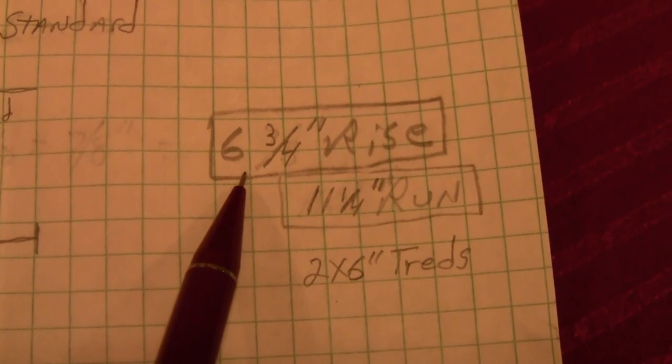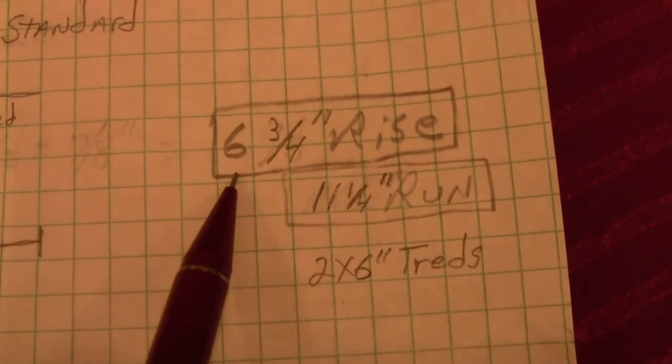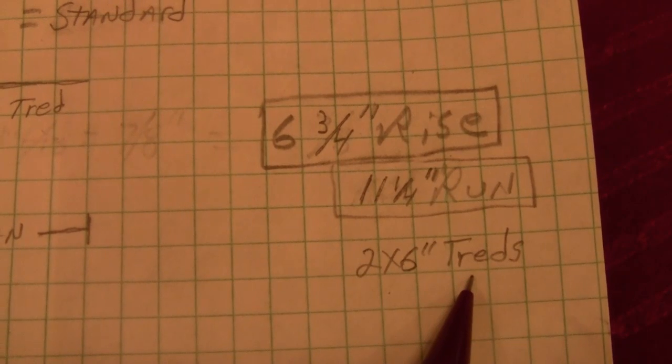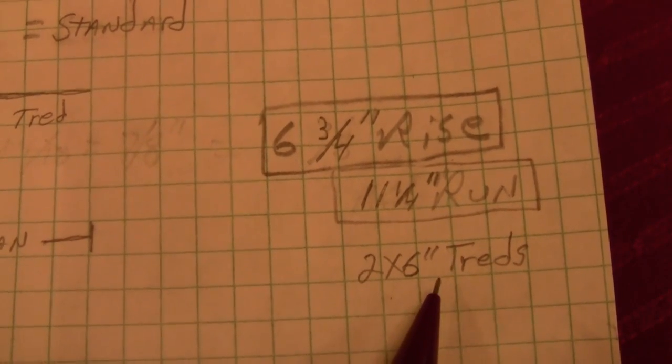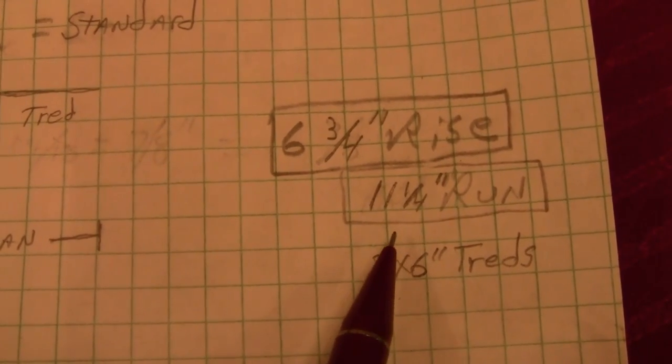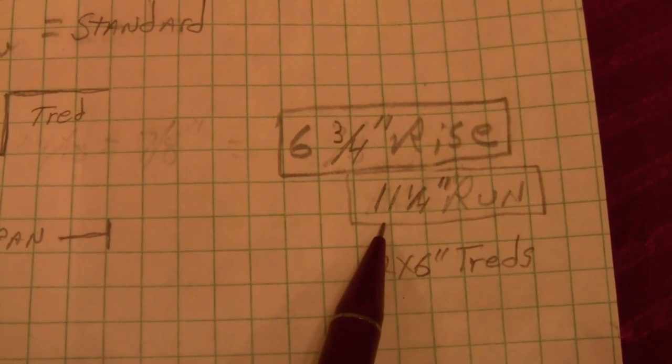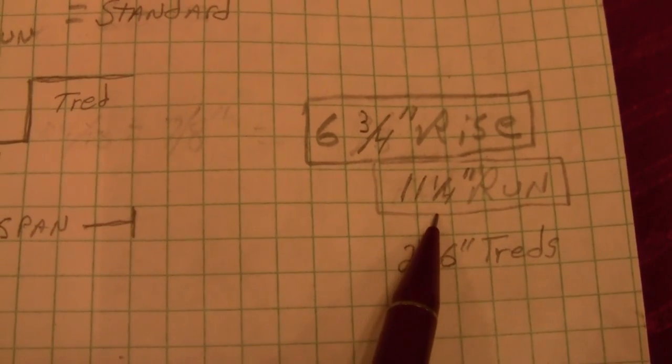So, 6 and 3 quarter inch rise. And I want to use 2 by 6's for my treads. And if you put a couple of 2 by 6's together with a little gap in between, you'll end up with 11 and a quarter inch for your run.